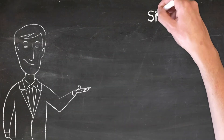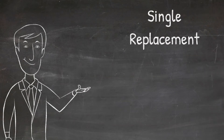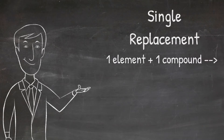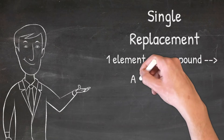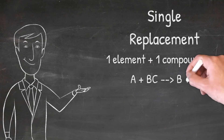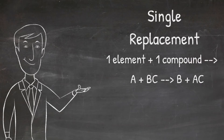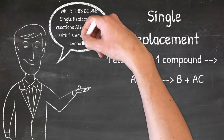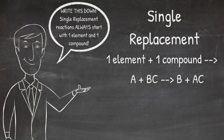The next reaction is single replacement. Single replacement reactions are reactions where one element that is by itself replaces another element that is bonded in a compound. Single means one, so it is easy to remember that one element is being replaced. The generic equation for a single replacement reaction is A plus BC yields B plus AC, where the element B was replaced by the element A. Write this down.